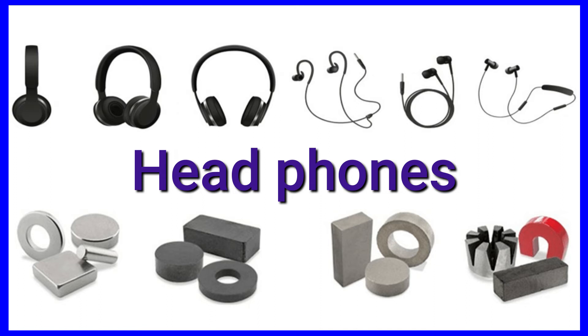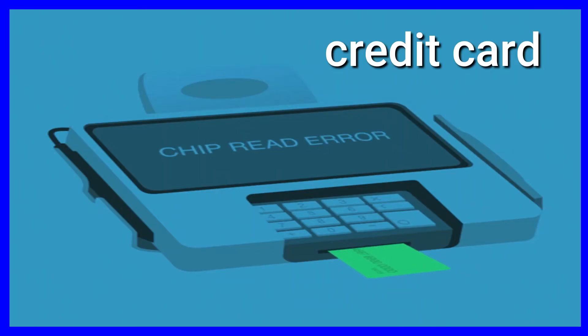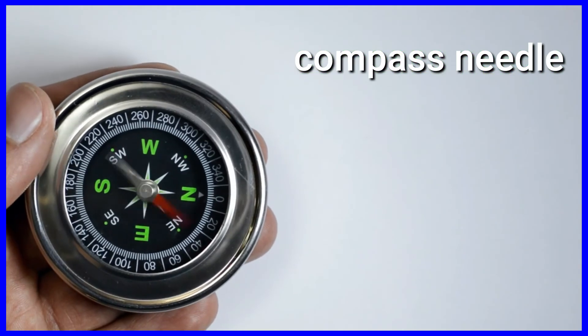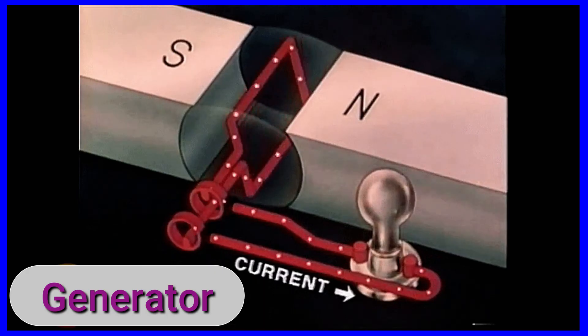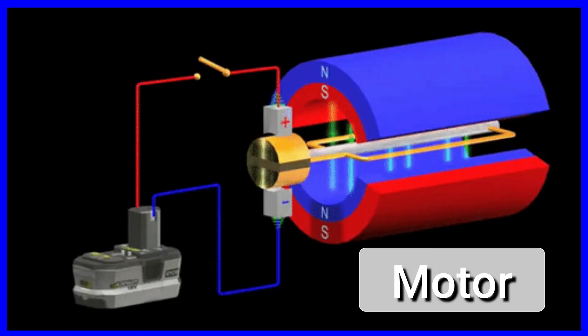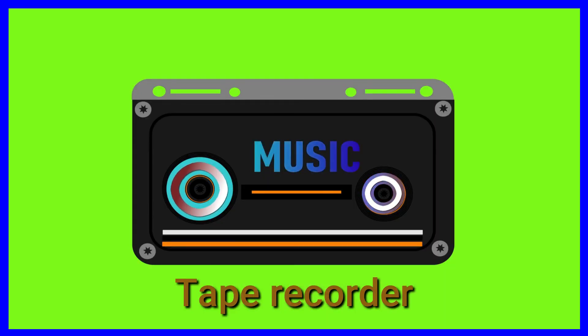Magnets are used everywhere. Let's have some more examples where magnets are used in our everyday life. We can see magnets in credit cards, compass needles, generators, motors, MRI machines, and in many more things like this.